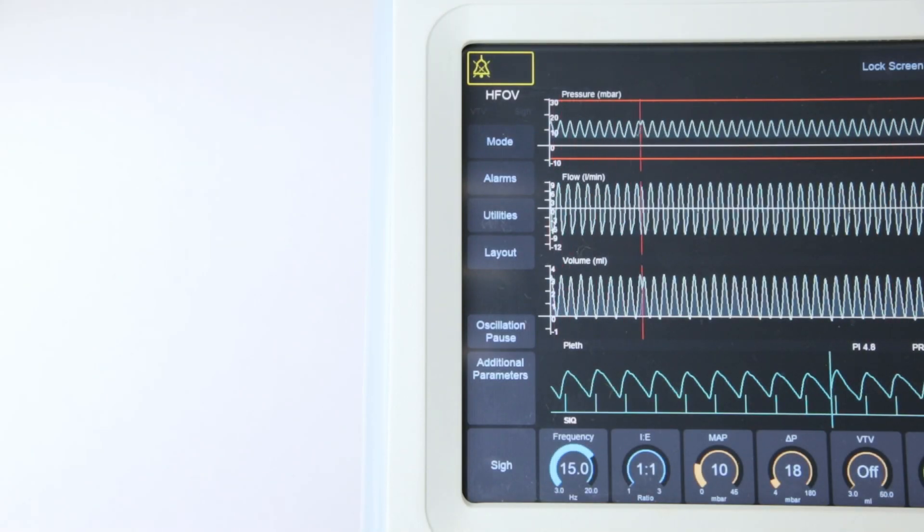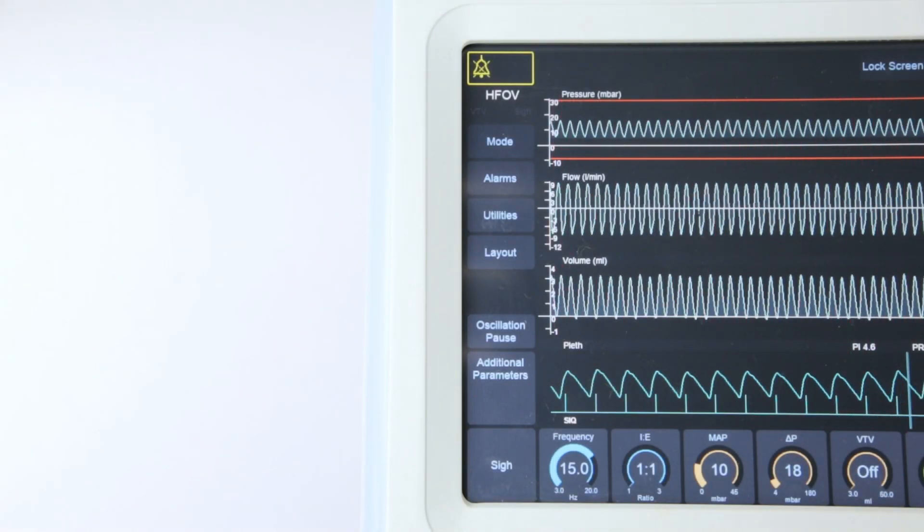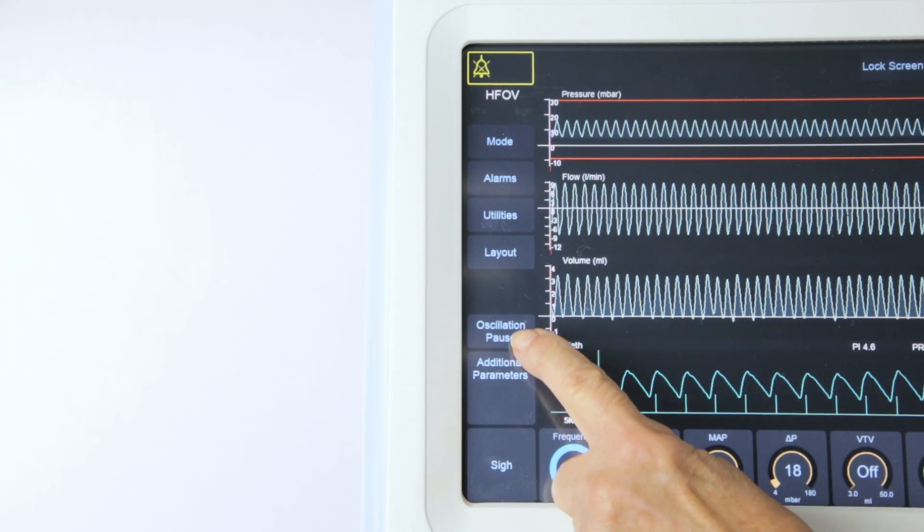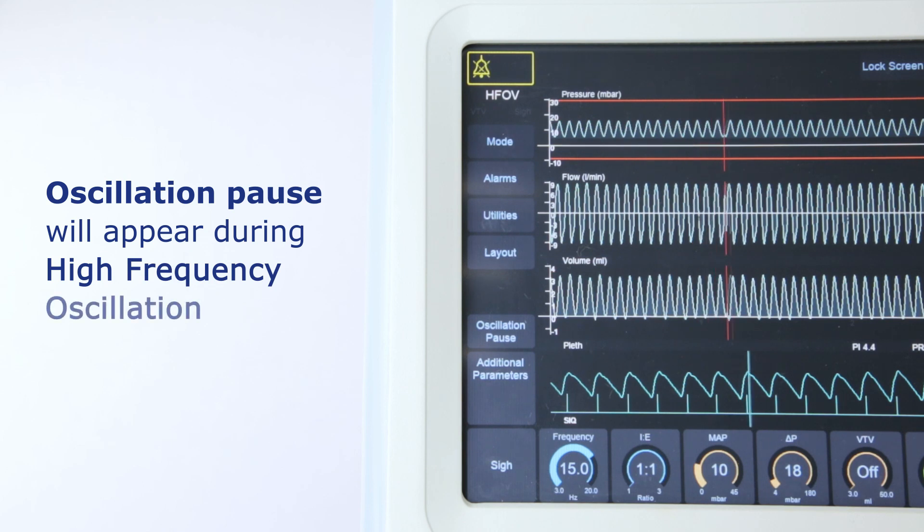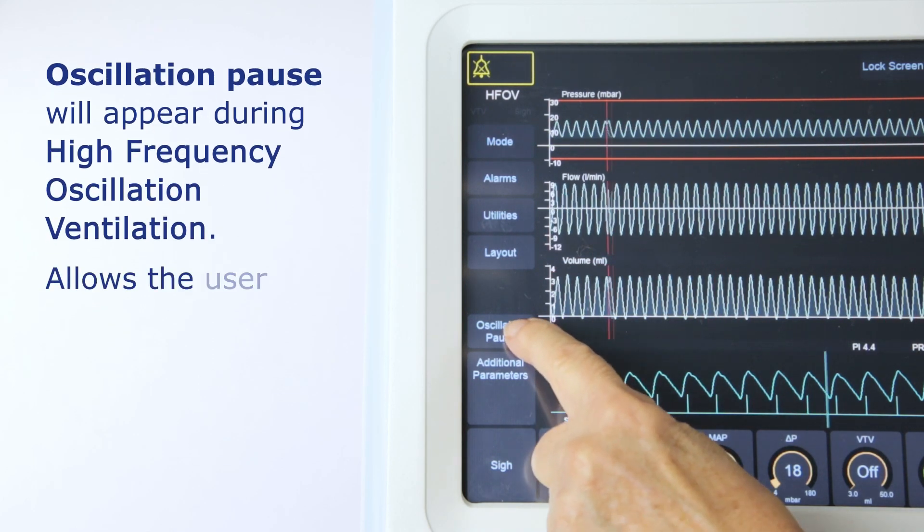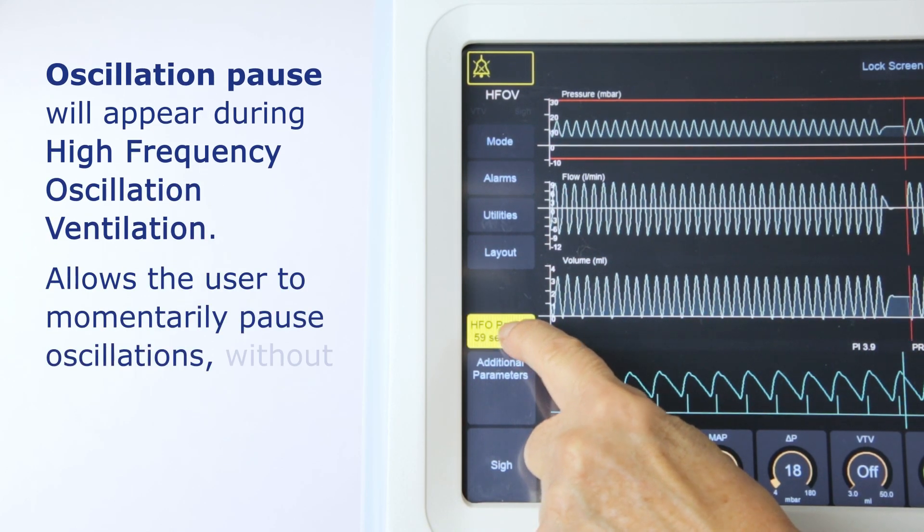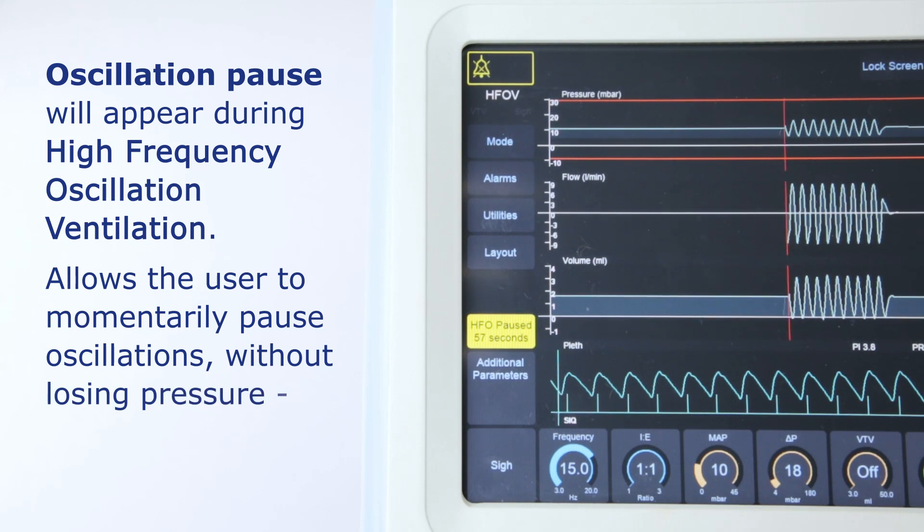Moving back to the left-hand side, beneath the Layout button is space for messages and other buttons. For example, Oscillation Pause will appear during High Frequency Oscillation Ventilation, and allows the user to momentarily pause oscillations without losing pressure, for X-rays, etc.